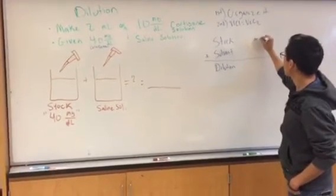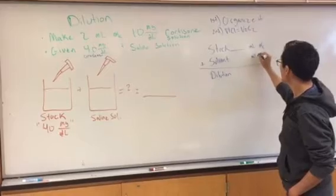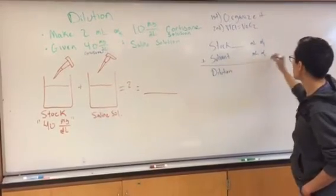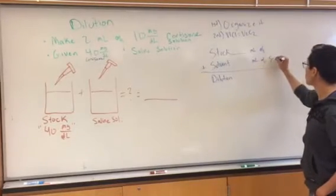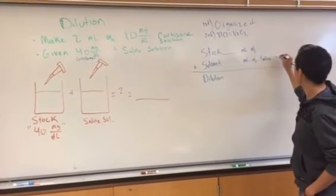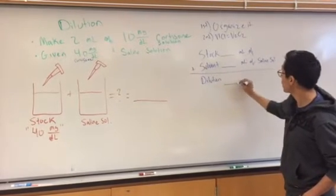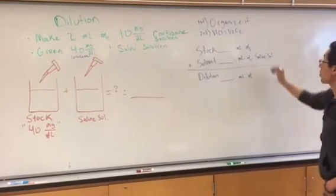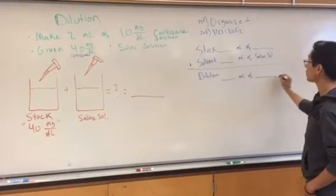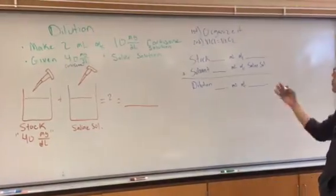Right here we'll have milliliters of something, milliliters of our solvent, in this case our saline solution. So the saline solution has a concentration. We're missing these areas here. This is going to be our go-to chart to organize it.